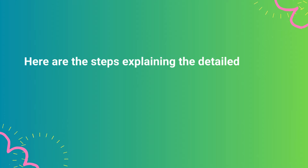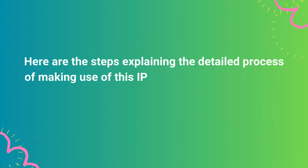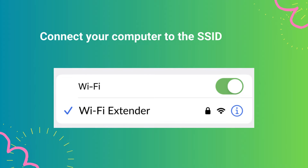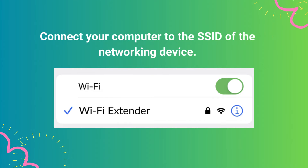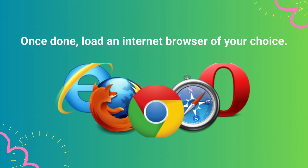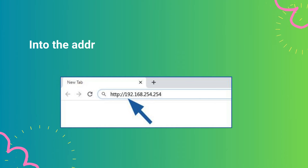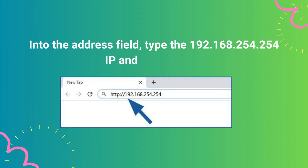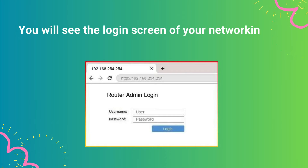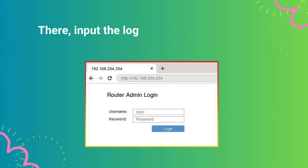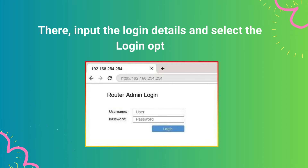Here are the steps explaining the detailed process of using this IP address to manage your home network. Connect your computer to the SSID of the networking device. Once done, load an internet browser of your choice. Into the address field, type the 192.168.254.254 IP and press enter. You will see the login screen of your networking device — router, modem, or extender. There, input the login details and select the login option.